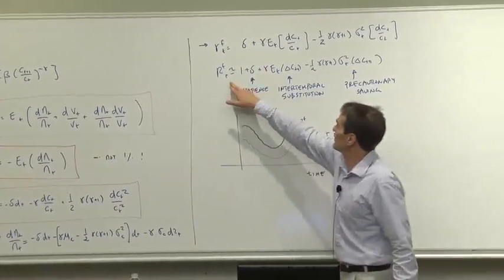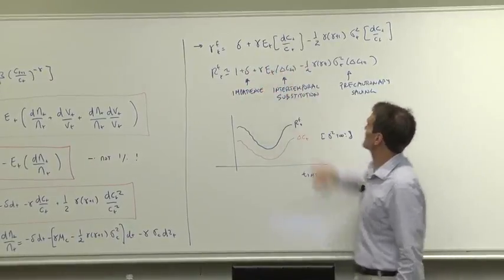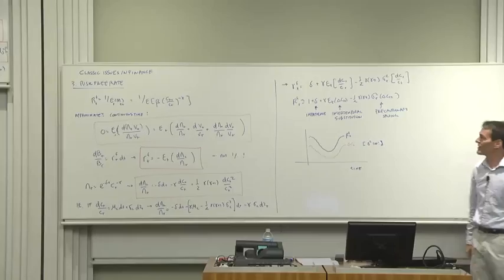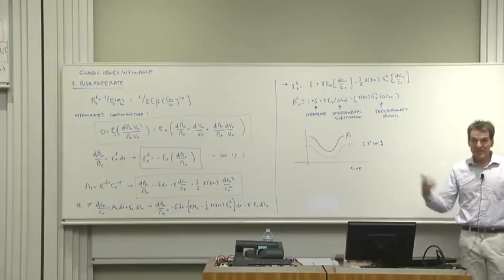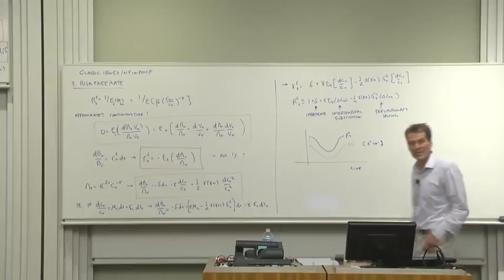We've been looking for an approximation to that thing. So in discrete time, the risk-free rate is the delta term, gamma times expected consumption growth, and gamma gamma plus 1 times the variance of consumption growth. Now you've done a lot of work. Let's sit back and enjoy the beauty of what we see.